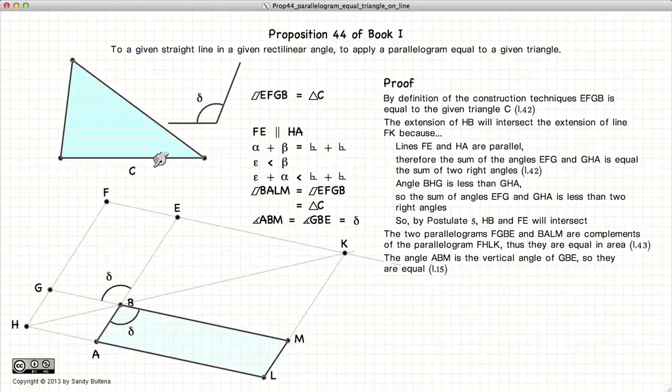So here we have demonstrated how to take a triangle, a given angle, and a given line segment, and construct a parallelogram equal in area to our triangle containing the angle delta along this line segment AB.